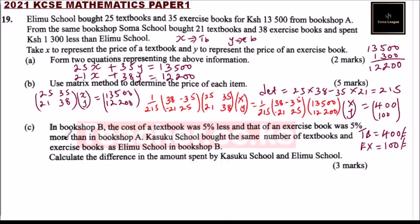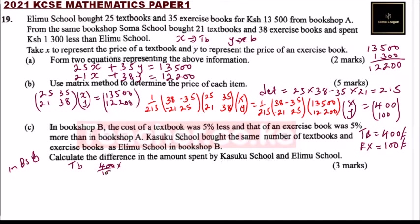Part c: In bookshop B, the cost of the textbook was five percent less than in bookshop A, and the cost of an exercise book was five percent more. Kasuku bought the same number of textbooks and exercise books as Erimu from bookshop B. Since the textbook costs five percent less and was 400 shillings in bookshop A, the new price is 400 multiplied by 95 over 100, which gives 380 shillings.